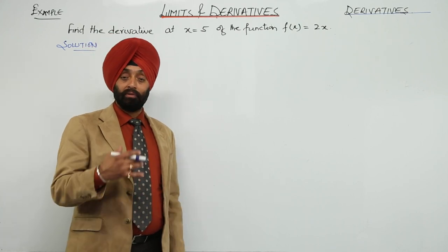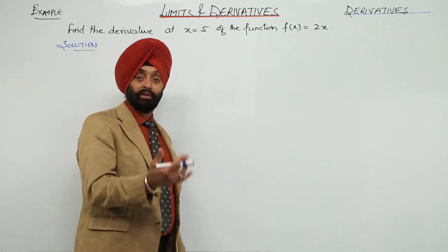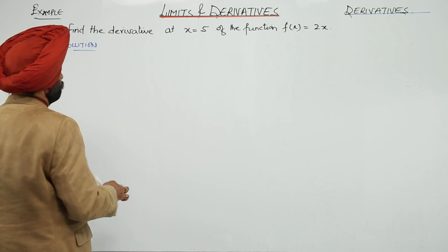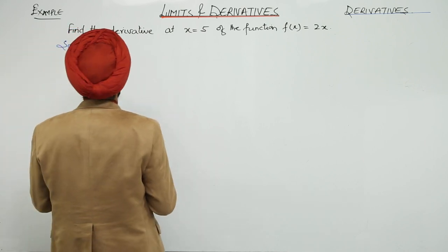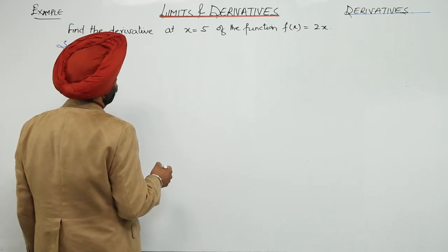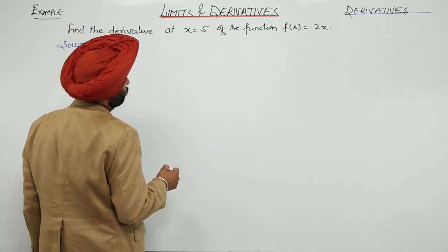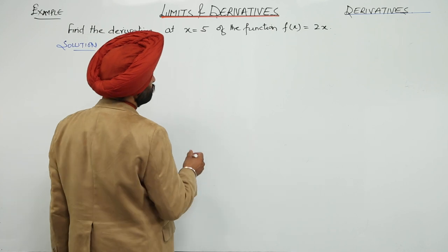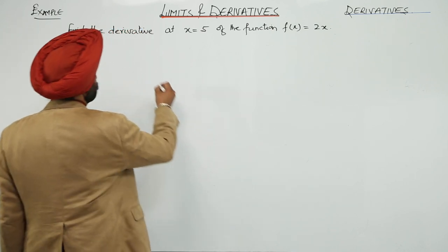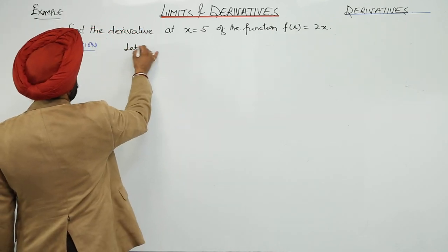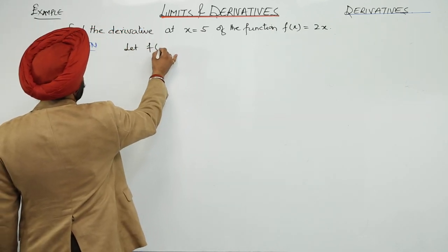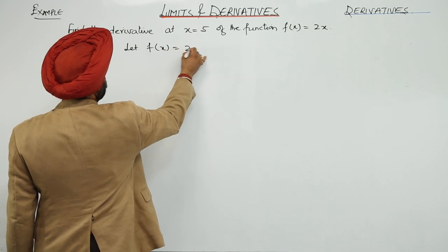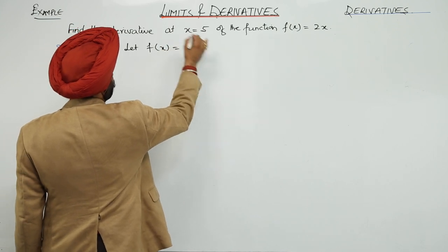Let us go for an example for the definition part. We have to find the derivative at x equal to 5 for the function f(x) equal to 2x. Let f(x) equal to 2x.